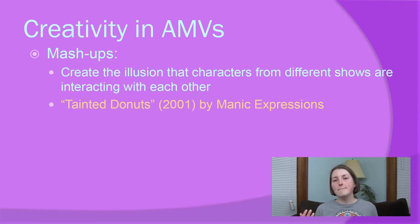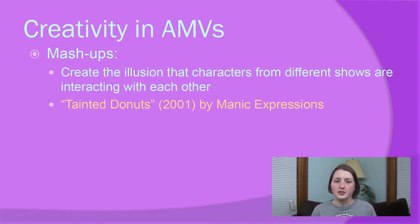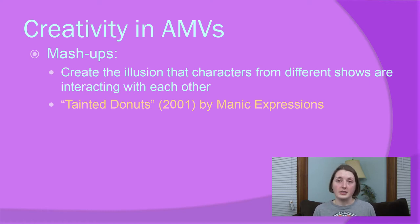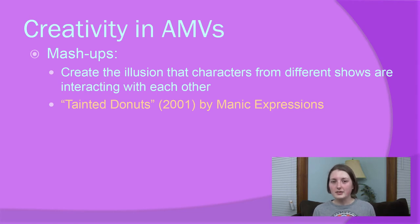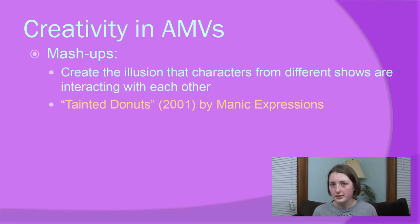Finally, you get what I have mentally dubbed mashup AMVs. These are AMVs that either use a lot of masking or just very clever, carefully timed cuts to make it seem as if anime characters from different shows are interacting with each other. This also means these AMVs often fall into the storytelling category, because they're telling a new story between otherwise unrelated characters. The example I used here, Tainted Donuts by Manic Expression, does have some masking in it, but not as much as you might expect considering how well they managed to blend the characters of Cowboy Bebop and Trigun together. It was made in 2001, so creating masking effects back then was even harder than it is today.